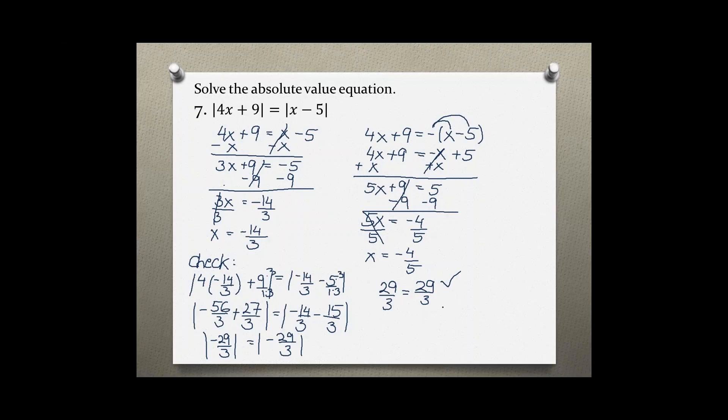So because I'm running out of space, I suggest you plug the second value into the original equation and see if you get a true statement. I can assure you, you should get a true statement. So your final answer for this problem is negative 14 over 3 and also negative 4 over 5. Both of these are valid solutions.